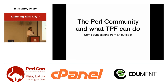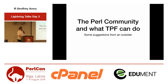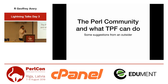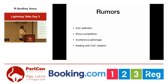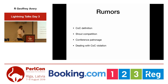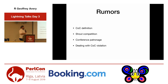This lightning talk is about the Perl community, and what the Perl Foundation (TPF) can do to improve, as an outsider's perspective. Over the last year I heard a lot of rumors about the Code of Conduct — people being too loud in the community, making others want to resign. The TPF should have some conference patronage and deal with COC violations better. Too private doesn't help anyone because no one knows the outcome, and then word of mouth takes over.